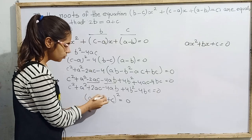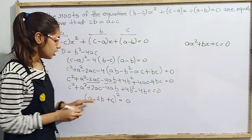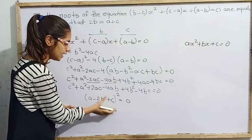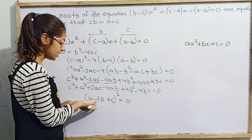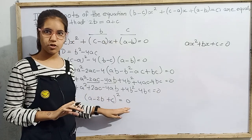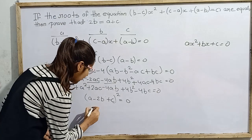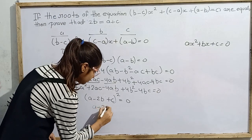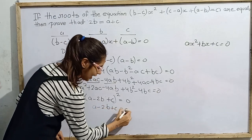a minus 2b plus c whole squared equals 0. So if this equals 0, then obviously a minus 2b plus c will equal 0. So no need to write that. So a minus 2b plus c equal 0. Like this we can write.